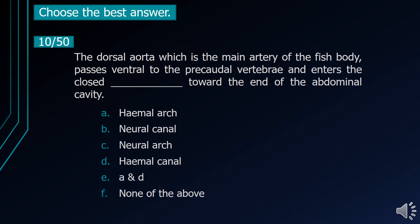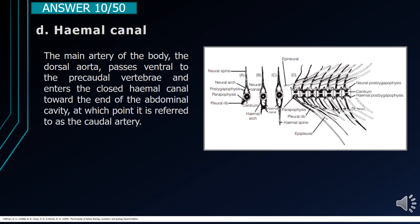Number 10. The dorsal aorta, which is the main artery of the fish body, passes ventral to the precaudal vertebrae and enters the closed blank toward the end of the abdominal cavity. A. Hemal arch. B. Neural canal. C. Neural arch. D. Hemal canal. E. A and D. F. None of the above. The correct answer is letter D, Hemal canal. The dorsal aorta passes ventral to the precaudal vertebrae and enters the closed hemal canal toward the end of the abdominal cavity, at which point it is referred to as the caudal artery.